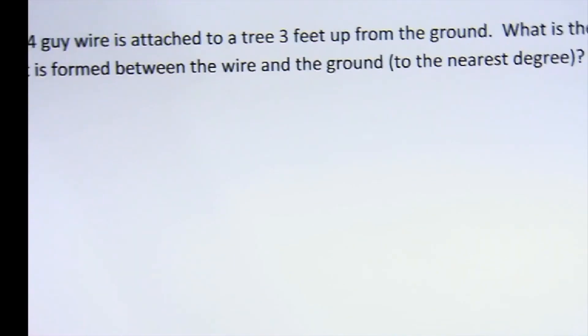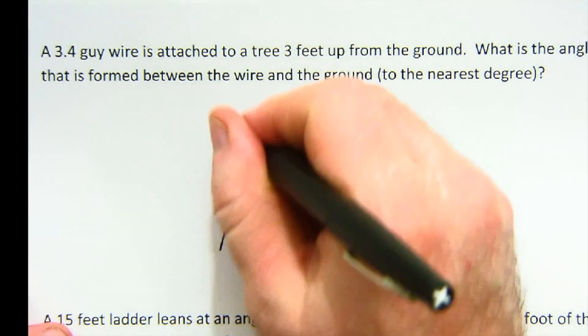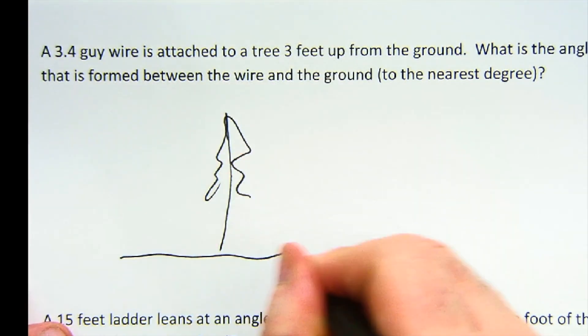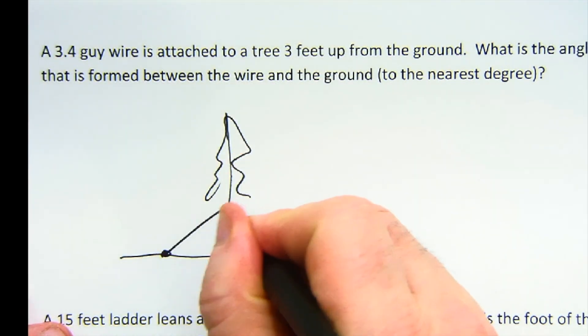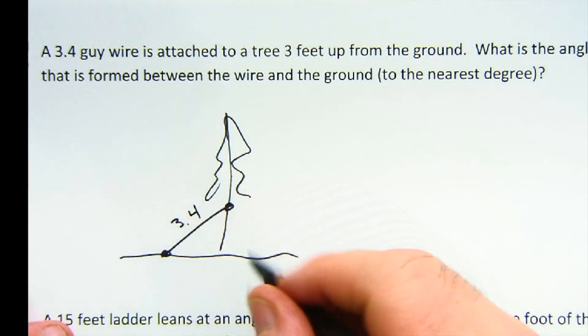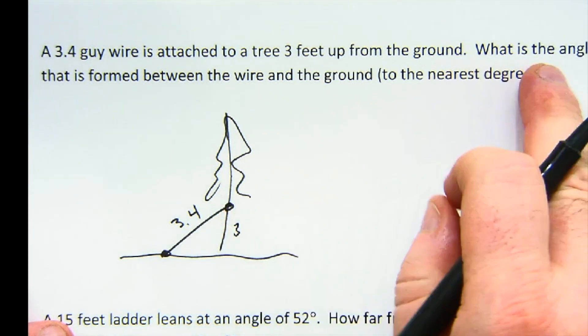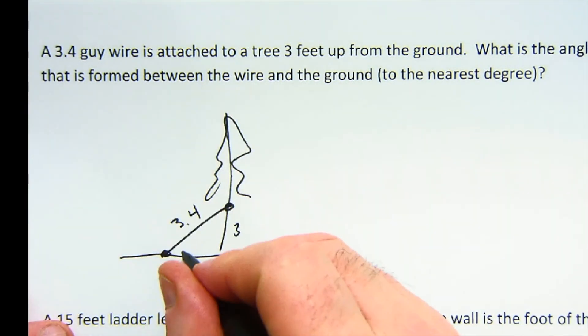Let me just do a couple setups here. I won't do the math on it, but we'll just draw a couple diagrams, see if you agree with the way I interpret them. This says a guy wire is attached to a tree. So here's my tree, here's my ground, here's my wire. A 3.4-foot guy wire, that's the wire itself, is attached to a tree 3 feet up. So there it is. What's the angle formed between the wire and the ground?